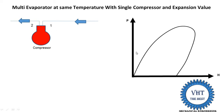Now we draw the 1 to 2 process on the P-h diagram. On the y-axis it is pressure, on the x-axis it is enthalpy, and this is the saturation curve. If you want to know the basics of P-h diagram, the link is provided on the top right of your screen. This is the critical point — from the critical point, left side is the liquid line and right side is the vapor line.